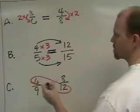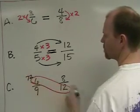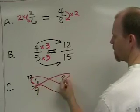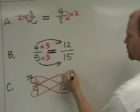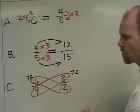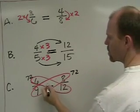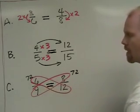And we can see that 6 times 12 is 72, and 9 times 8 is 72. And since both cross products are equal, we know both ratios are equal.